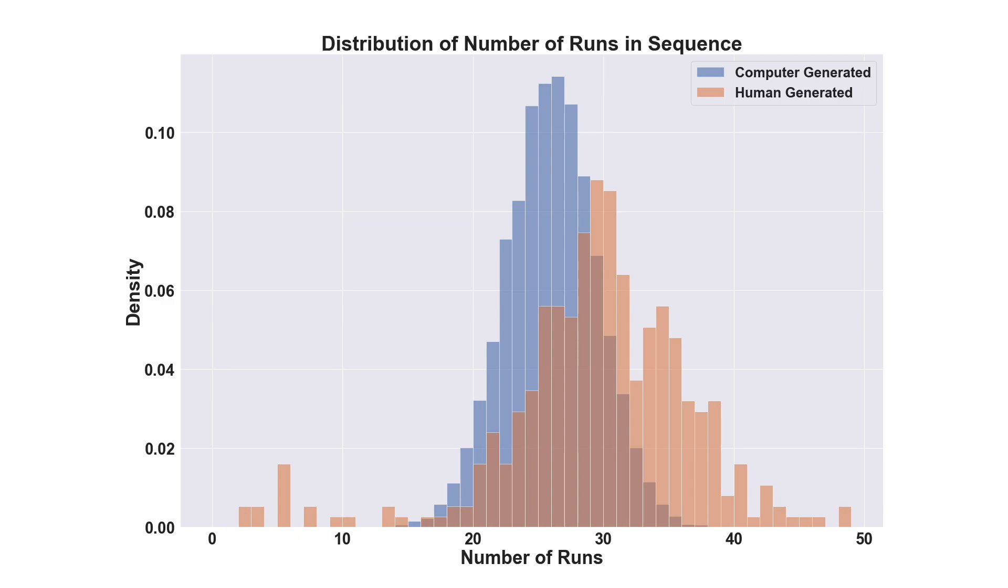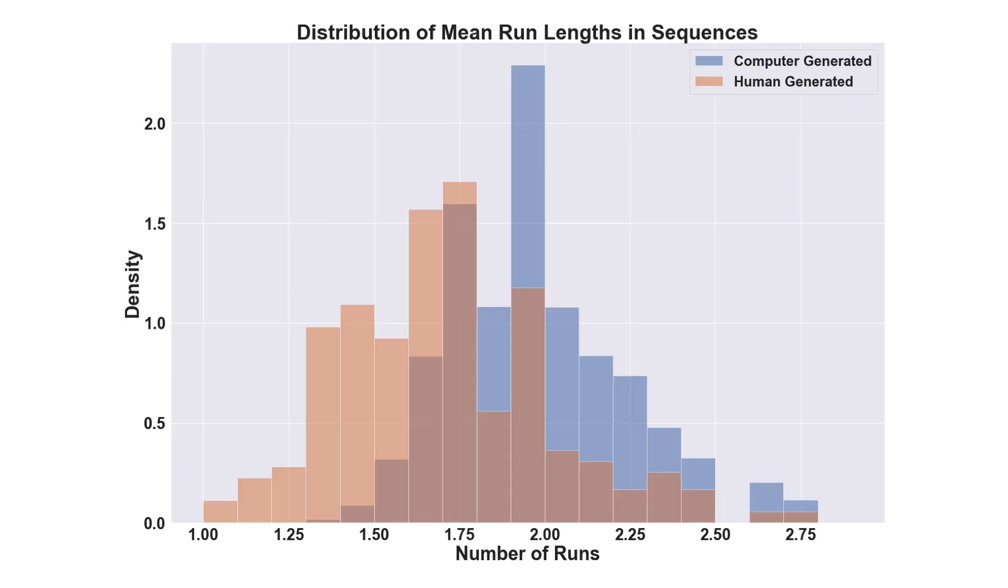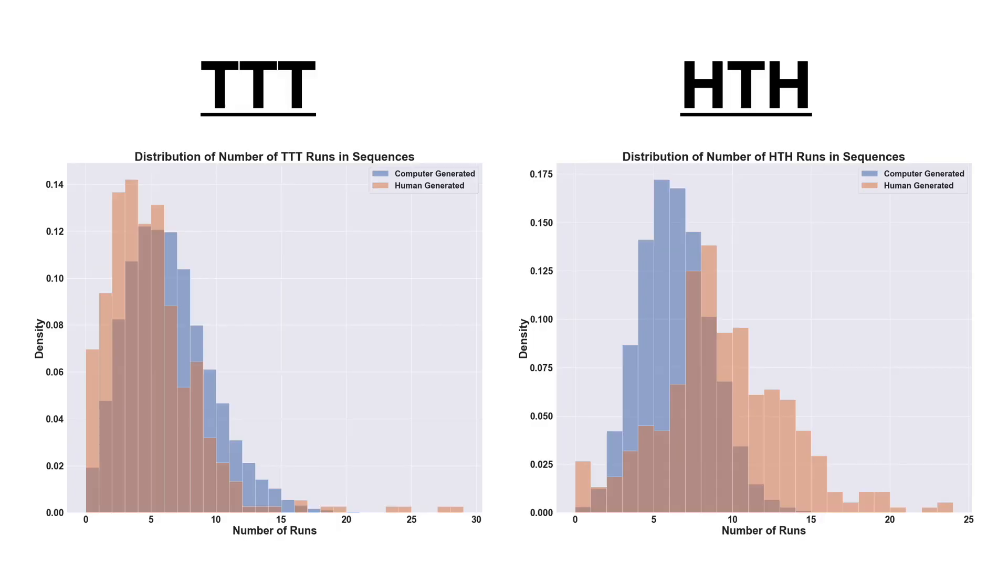So if we come across a sequence of coin flips that has more than 35 runs, we can be pretty confident that this is a run that was made by a person, since the odds of this happening for a randomly generated sequence are so low. The higher number of runs for human generated sequences makes sense when we look at the comparison in the mean run lengths. We can see that people tend to keep their runs shorter than what actually occurs in random sequences. This also means that people are less likely to have streaks of things like three tails in a row, and are more likely to have streaks such as heads, tails, heads, as shown in these two graphs here.